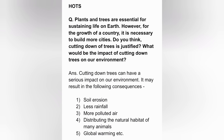HOTS: Plants and trees are essential for sustaining life on earth. However, for the growth of a country, it is necessary to build more cities. Do you think cutting down trees is justified? What would be the impact of cutting down trees on our environment? Answer: Cutting down trees can have a serious impact on our environment. It may result in the following consequences: first, soil erosion; second, less rainfall; third, more polluted air; fourth, disturbing the natural habitat of many animals; fifth, global warming, etc.